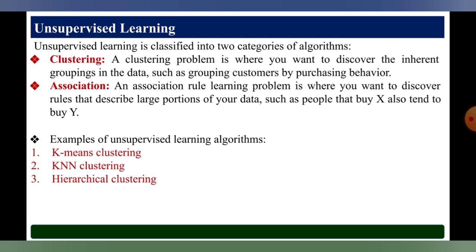The first algorithm category is clustering. A clustering problem is where you want to discover the inherent groupings in the data, such as grouping of customers by purchasing behavior. The second category is association. In association rules learning, the problem is where you want to discover rules that describe a large portion of your data, such as: people that buy X also tend to buy Y.